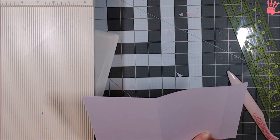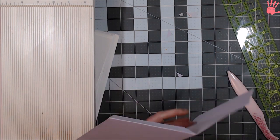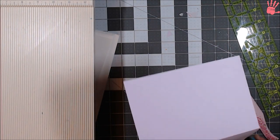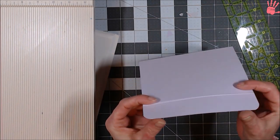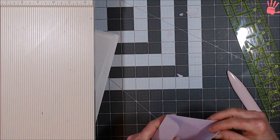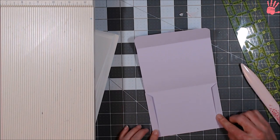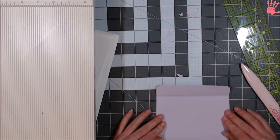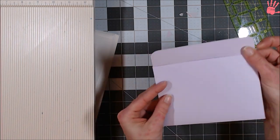And I will trim this with a half inch round, half inch, not round, half inch corner rounder. And then you add glue right here and fold it up. And you have an envelope.